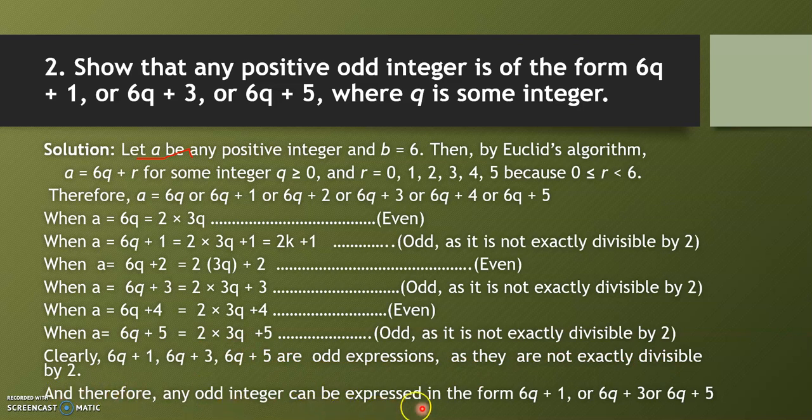Therefore, any odd integer can be expressed in the form of 6q + 1, 6q + 3, or 6q + 5.